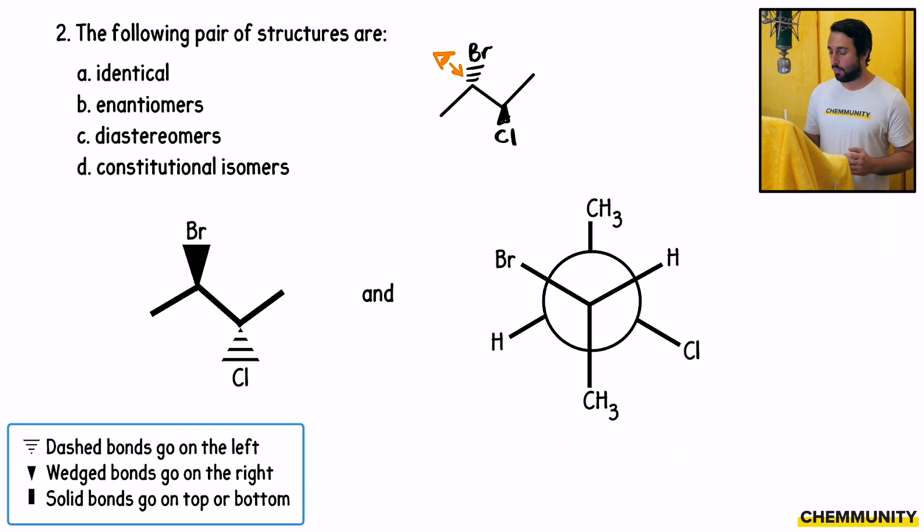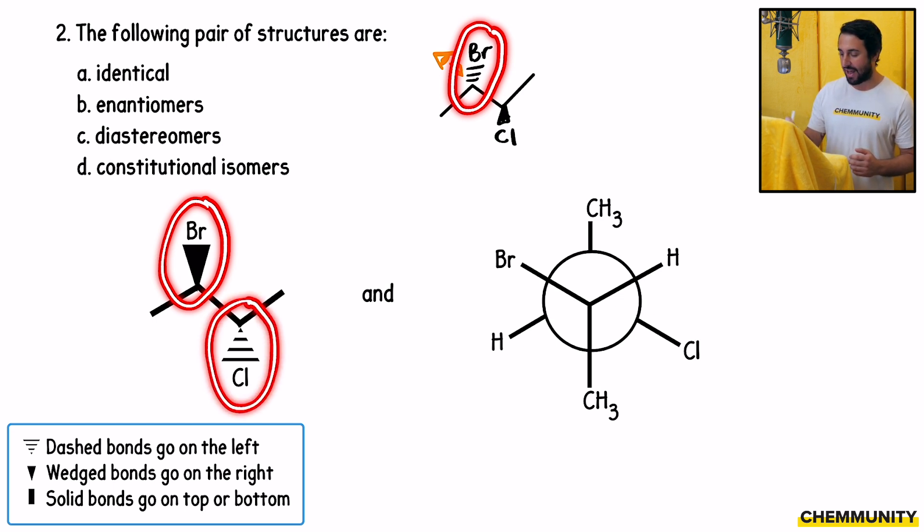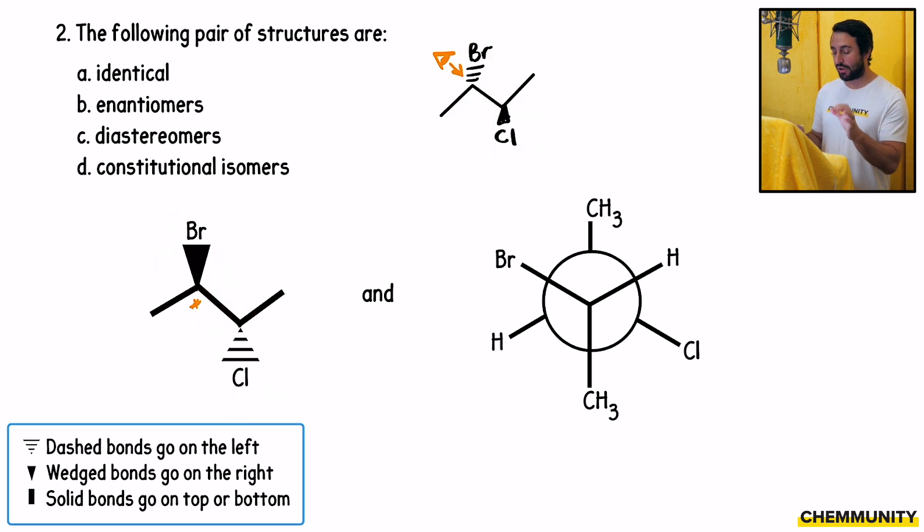Now we want to compare what we see with the first structure. So over here, we have the bromo group on the wedge and on this structure we have it on the dash. And then for the chloro group, we have it on the dash and over here we have it on a wedge. And so what we have done is we have inverted the stereochemistry at each of the chiral centers. We have two chiral centers and we have inverted the stereochemistry, and these are two different functional groups, so there's no way that we can rotate the second one to get back the first one. They cannot be identical because they are different groups. Since we have inverted the stereochemistry at all of the stereocenters, we have gotten the mirror image. That is the enantiomer.